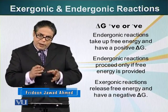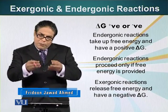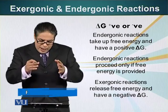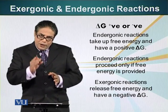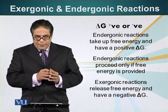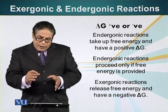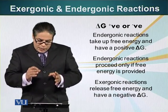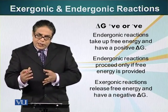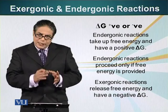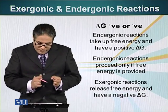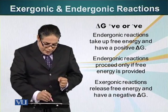In the case where energy has to be provided to the system — endergonic reactions — the value of delta G is a positive number. For reactions which are exergonic, they release energy, and in this case delta G is a negative number.